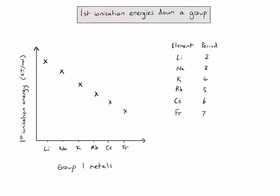So for lithium, which is in period two, the valence electrons are in the second energy level. For sodium that's found in period three, the valence electrons are found in the third energy level. And so on.